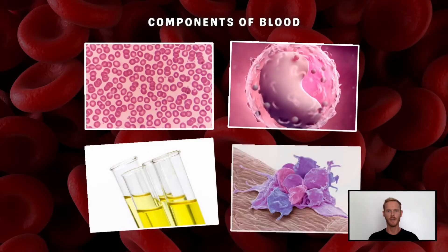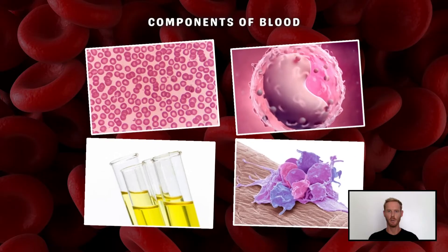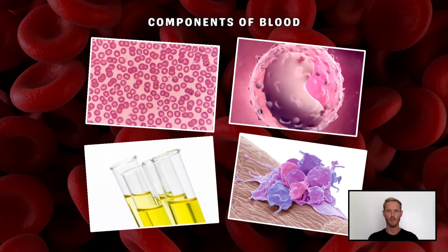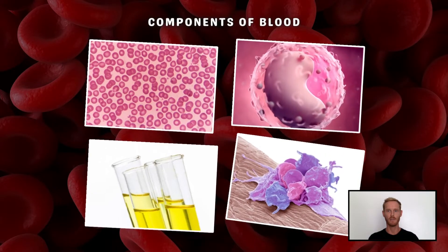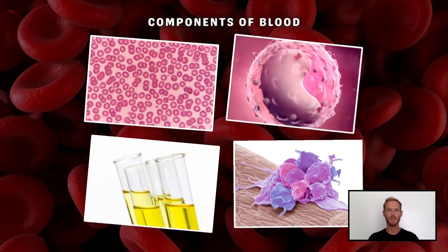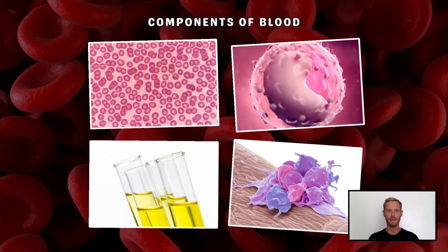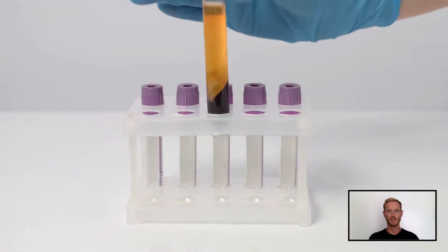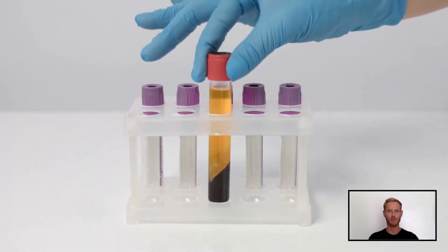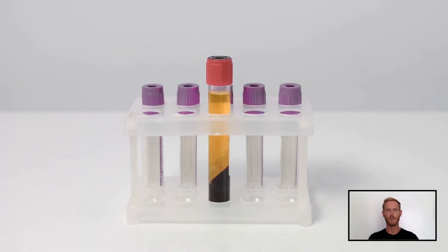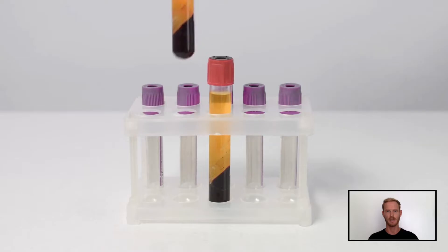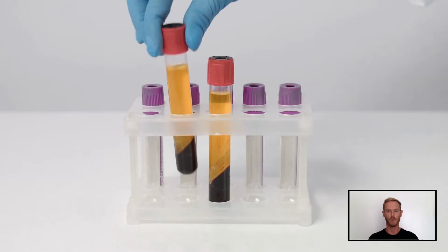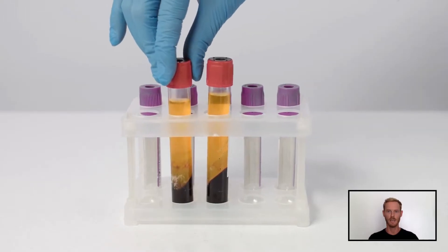Blood is a specialised body fluid with four main components: red blood cells, white blood cells, platelets, and plasma. By spinning a blood sample in a centrifuge, the heavier components sink to the bottom, allowing us to see the relative proportions of each.